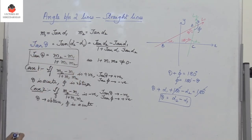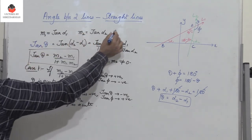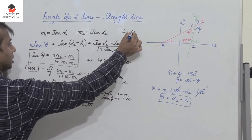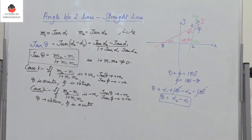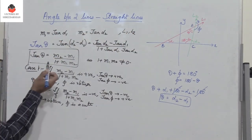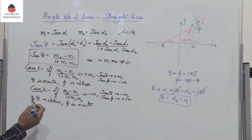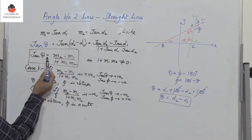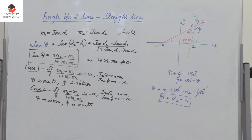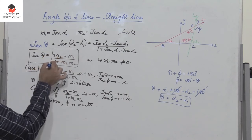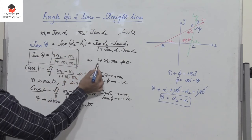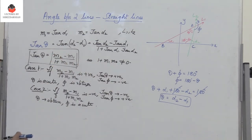In general, if we assume theta is the acute angle between the two lines l1 and l2 with slopes m1 and m2, it is given by: tan(theta) equals the magnitude of (m2 minus m1) divided by (1 plus m1 m2), provided 1 plus m1 times m2 is not equal to zero. This is the expression to remember.